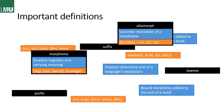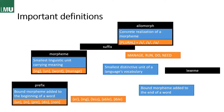Then we have the allomorph, which is the concrete realization of one of those morphemes. The most prominent example is the plural, which can come in the form of a voiceless sound, a voiced sound, or -iz, but we'll get to that later. Then we have the prefix, which is a bound morpheme added to the beginning of a word, as in the examples un-, in-, pre-, dis-, or non-.